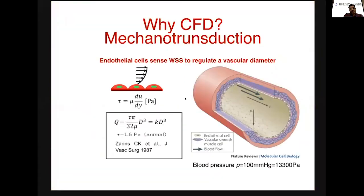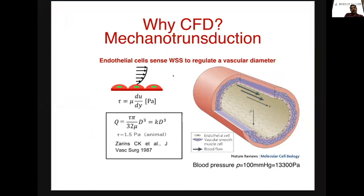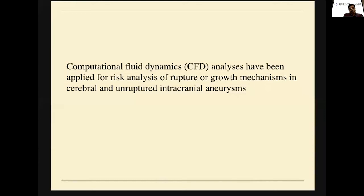The new techniques — why CFD mechanotransduction? Endothelial cells sense the wall shear stress; it is a frictional force between the blood and the vessels. Because of this wall shear stress, there will be multiple changes in the aneurysm. But the main drawback of CFD is these things are taken at a single point of images — these are not continuous. There are no studies with continuous CFDs in patients. So the common variables are velocity, pressure, oscillatory shear index, and wall shear stress. This analysis has been applied to risk analysis of rupture and the growth mechanisms in cerebral and unruptured intracranial aneurysms.